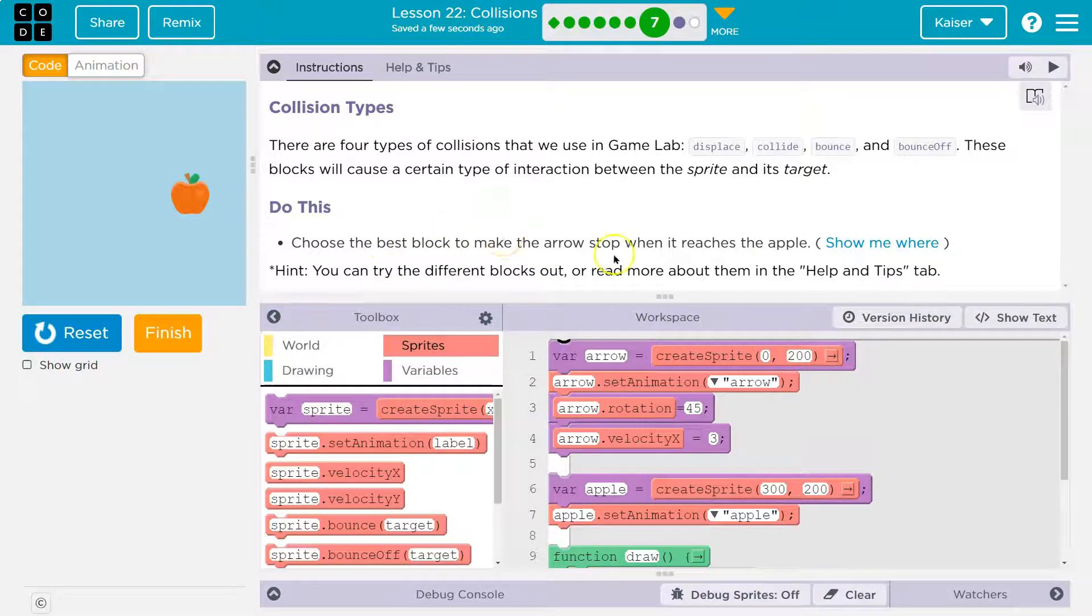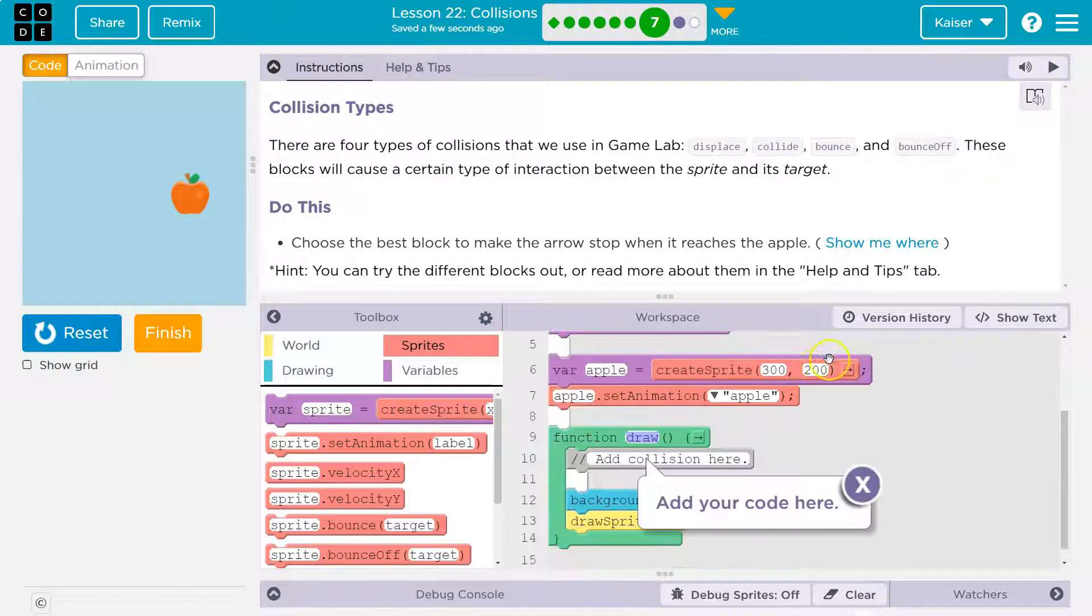Choose the best block to make the arrow stop when it reaches the apple. Show me where. Okay, so we are putting it inside the draw loop.